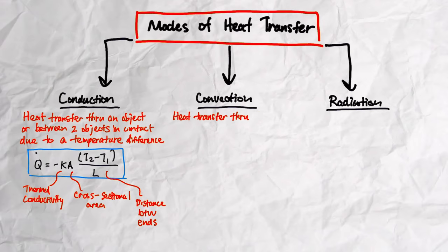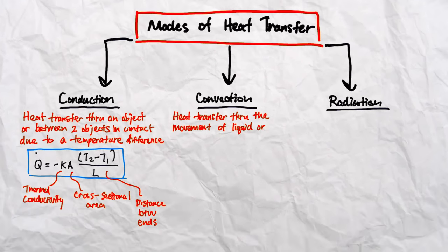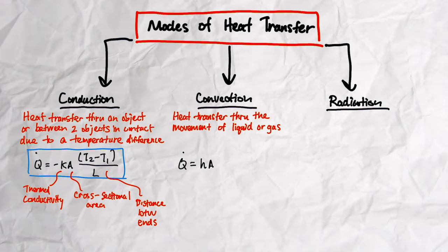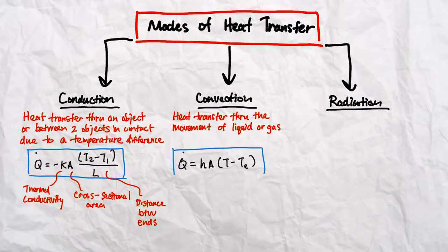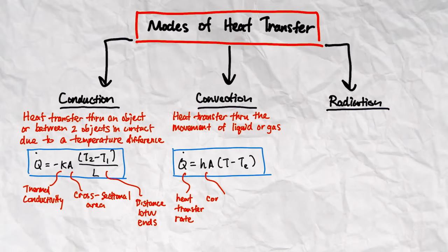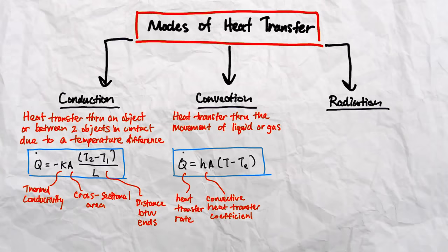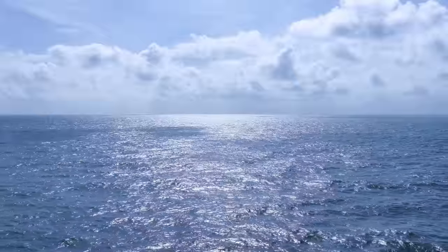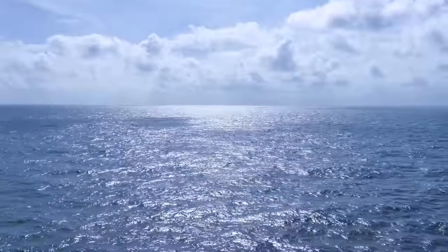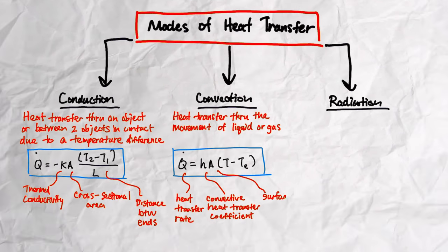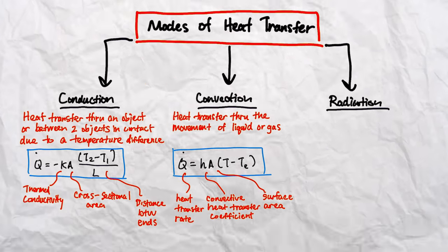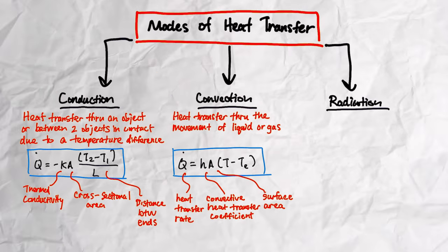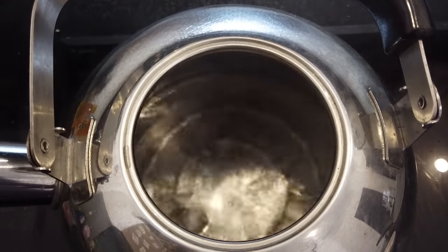Convection is when heat is transferred by the movement of a liquid or gas and can be represented by Newton's law of cooling. Q dot is the heat transfer rate. H represents the convective heat transfer coefficient, which quantifies a fluid's ability to transfer heat. Water, for instance, is better than air at transferring heat. A is the surface area, T is the temperature of the object's surface, and TE is the temperature of the environment. An example is water boiling.